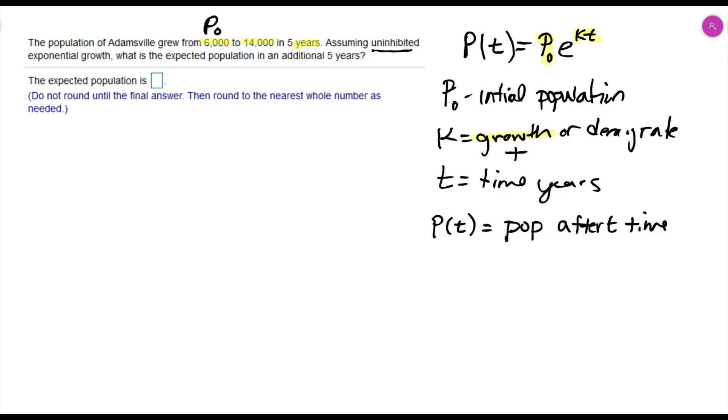If we grow to 14,000 in five years, we have a time of five years and we get to a new population, P(5), and that new population is 14,000.